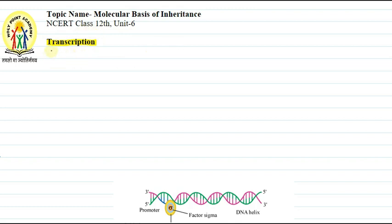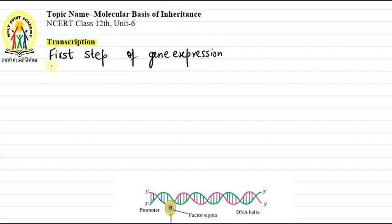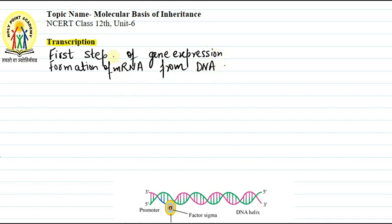What is transcription? It is the first step of gene expression. This process involves the formation of RNA from DNA — specifically, we can say mRNA from DNA. So that is the process of transcription: we are going to make RNA from DNA.